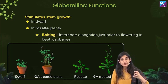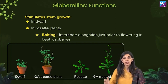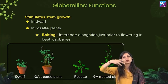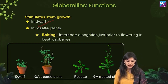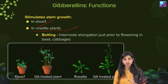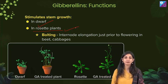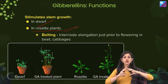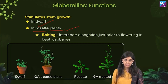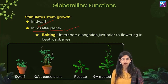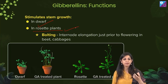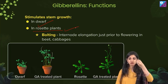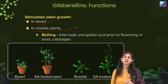Dwarf plants are genetically shorter in stem height. If we spray gibberellin on them, they would grow into longer plants. So it stimulates stem growth in dwarf plants and rosette plants — a very important concept for the exam. Rosette plants are plants which grow in a circular fashion, like cabbage. In such plants the stem height is negligible, but spraying gibberellins gives them some height, making nutrient transport easier.